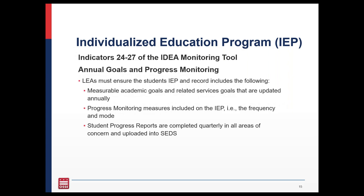Continuing into the IEP theme, indicators 24 through 27 focus on the student's annual goals and progress monitoring. IDEA monitors will review the student's annual goals to ensure the IEP includes updated, measurable goals with current dates within the last calendar year. Monitors will also review the student's records to ensure current progress reports are uploaded. More detailed information on indicators 24 through 27 can be found on pages 12 and 13 of the IDEA tool.